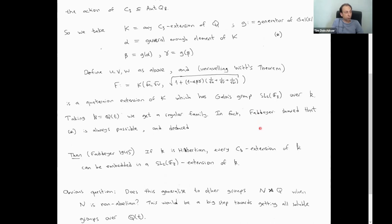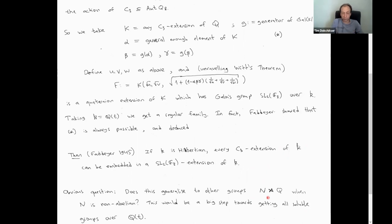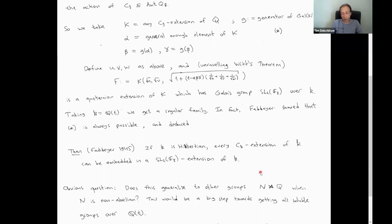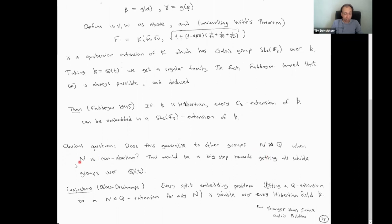This construction is interesting because it solves an embedding problem where the kernel is a non-abelian group. You can ask whether you can generalize it to other groups — semi-direct products N ⋊ Q where N is non-abelian. If you could do this for at least solvable groups you could get very far. This is not known — it's not known for which class of groups it's possible — but there's a big conjecture by Bayer-Dechamps.